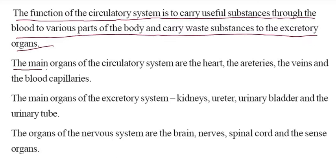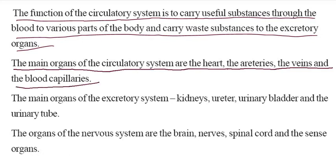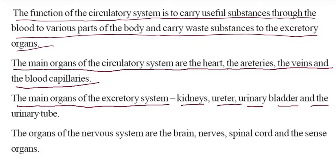The main organs of the circulatory system are the heart, arteries, veins, and blood capillaries. The main organs of the excretory system are the kidney, ureter, urinary bladder, and the urinary tube.